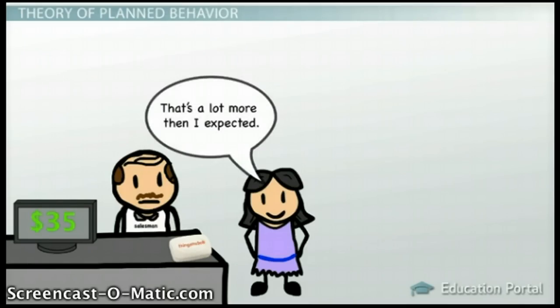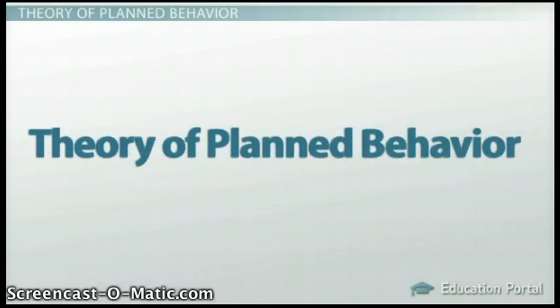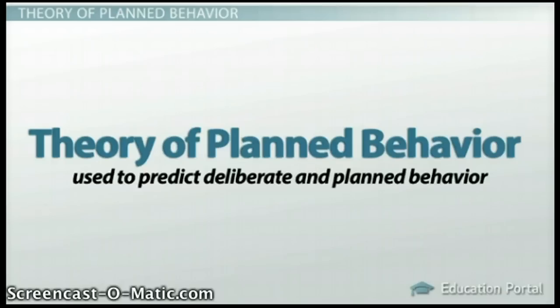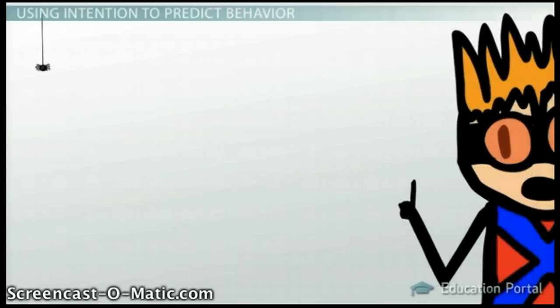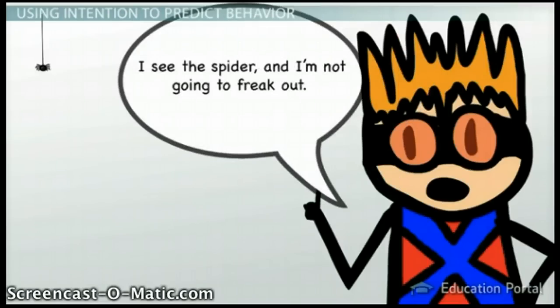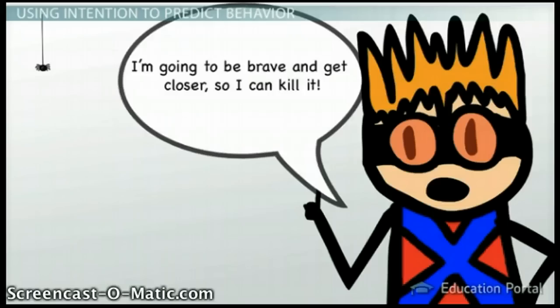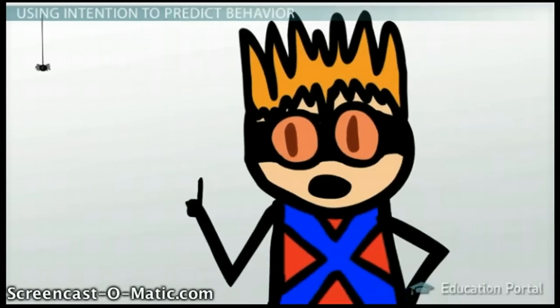Attitudes combined with perceived control and norms actually predict our intentions. This is the basis of the theory of planned behavior, which is used to predict deliberate and planned behavior. According to this theory, when people have time to plan how they are going to behave, the best predictor of that behavior is one's intention. In other words, to predict what people are going to do, you need to know what they intend to do.